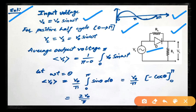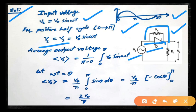Since the diode is ideal, when it is forward biased it acts as a short circuit. So the source voltage passes directly through, and the source voltage appears directly across the load resistance. Therefore VL equals VS, which equals V0 sin(ωt).